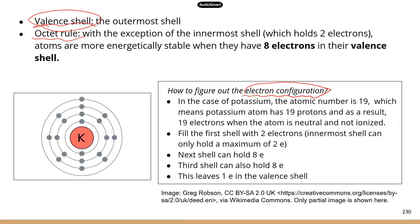If you are given a certain number of electrons, what you want to do is for the innermost shell, assign two electrons — that will provide a stable configuration. Let's say I give you 13 electrons. The first shell can hold up to two electrons. So you definitely have more than two electrons, so you're going to put down two for the first shell. Now you are down to 11 electrons, so you just keep filling the rest of the shells.